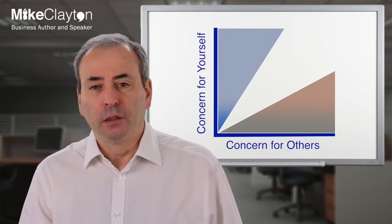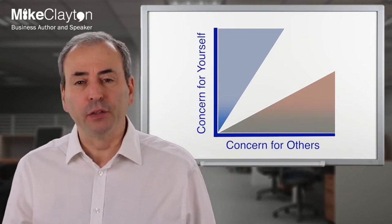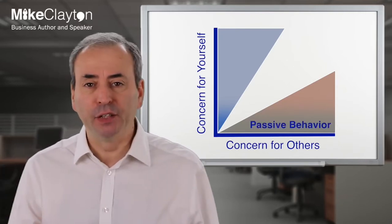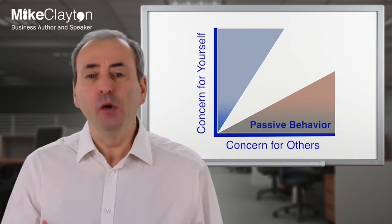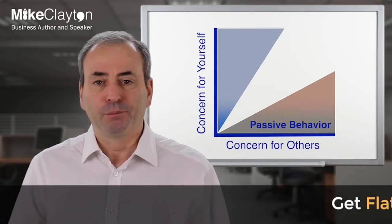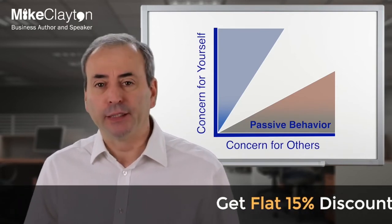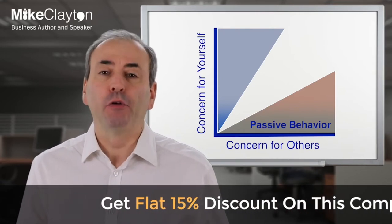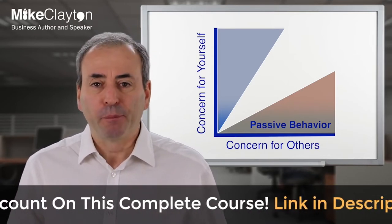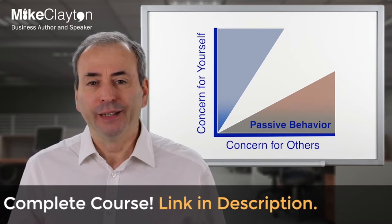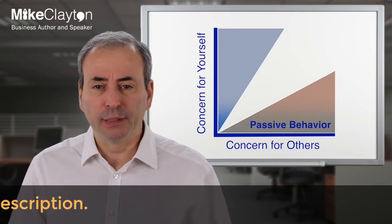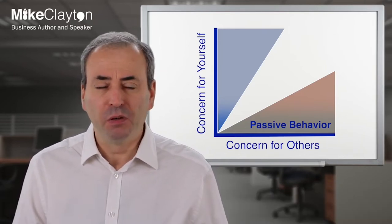At the bottom of the chart, where you have high concern for others and relatively low concern for yourself, that leads to passive behaviors — where we're prepared to subordinate our own legitimate concerns, needs, and rights to others, which leads to inner conflict. It makes us hesitant to offer our own point of view or ask for help. We're unassertive, our primary concern is to just get by, we find it hard to say no, we're uncomfortable with responsibility, and our focus is on not getting hurt.